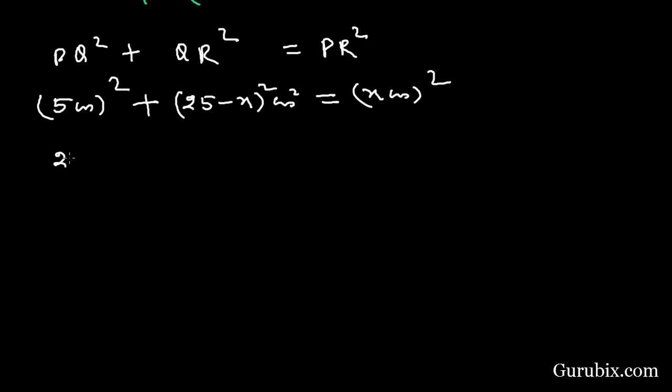If we further calculate it, it would be 25, it would be 625 minus 50x plus x squared. Here we have x squared and x squared is cancelled. Here we have minus 50x equals minus 600.